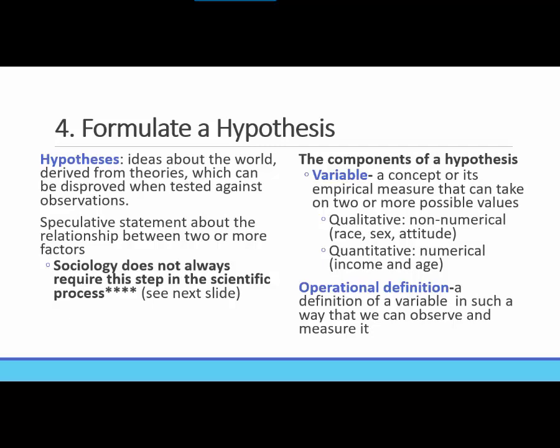Hypotheses are composed of variables. A variable is a concept that can take on two or more possible values. You can have qualitative variables — non-numerical variables, things that can't be reduced to numbers, such as race, sex, gender, or a specific attitude or behavior. Then you have quantitative variables, which are numerical or can be reduced to numbers, such as income, age, or years of education. For example, asking how many pets you have is a quantitative variable, while asking what type of pets you have is a qualitative variable.